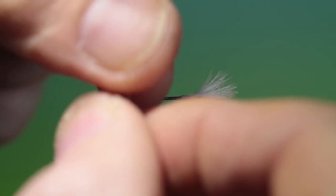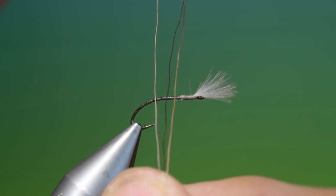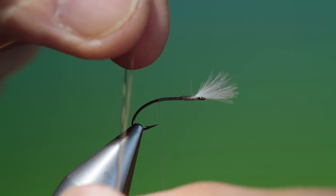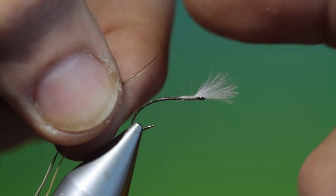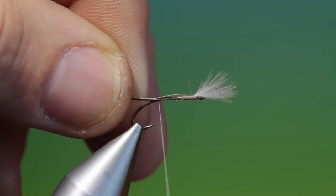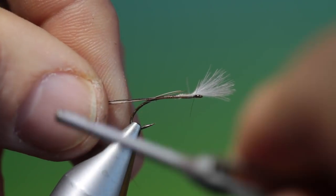We need three moose hairs, a brown, a black and a white. You can choose the colour of these but this is the combination I like best. We want to line up the tips of the moose hair. Tie these in.